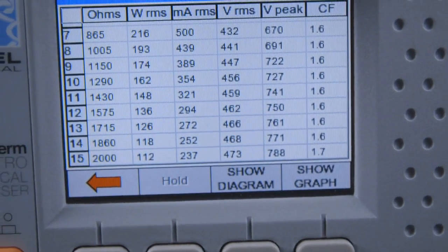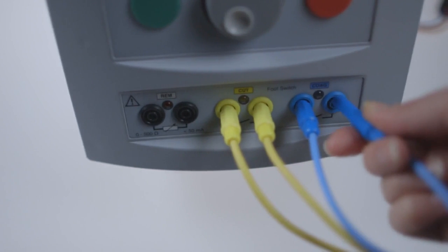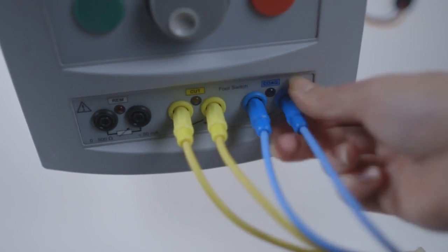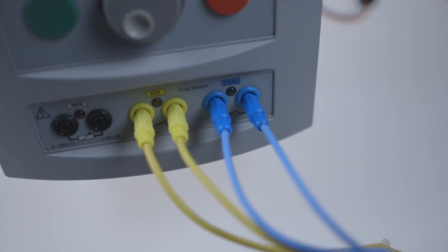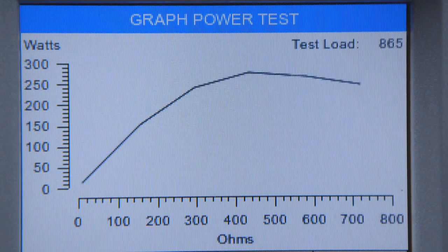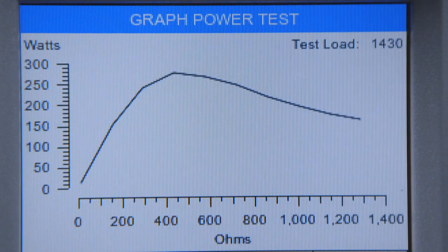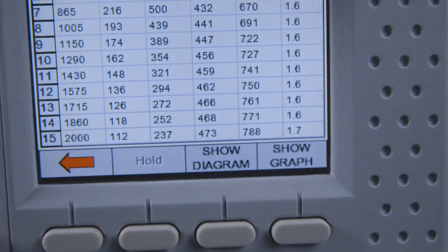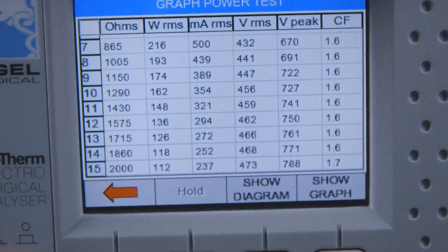Output power measurements are clearly displayed while the cut and coag foot pedal control automates the process. Graphical representations of power distribution curves can be easily switched to numerical data at the touch of a button.